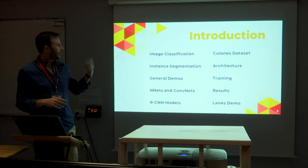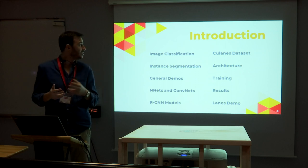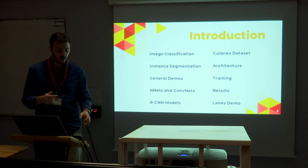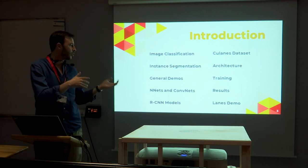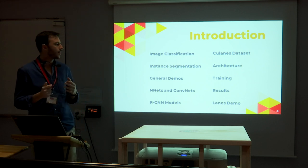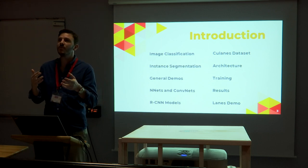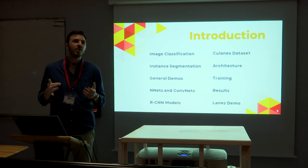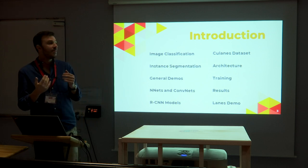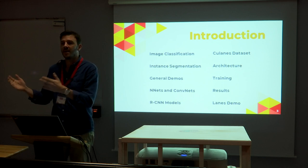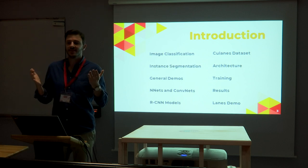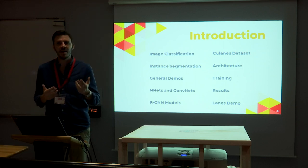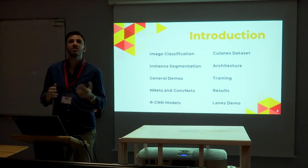I will make a brief introduction about image classification and image segmentation. The main project I made is called Towers Instance Segmentation. We will see some general demos, then go into neural networks — specifically convolutional neural networks for images. After that, we'll move into detecting several objects in the same image using RCNN — Regional Convolutional Neural Networks — progressing to Fast RCNN, Faster RCNN, and finally Mask RCNN, the model I used. We'll also cover the CuLane dataset, architecture, training, and results.